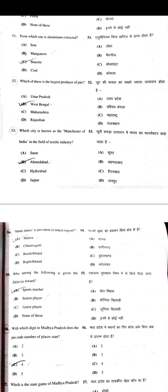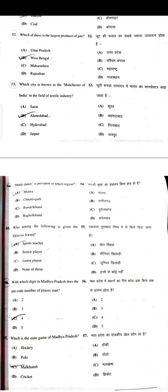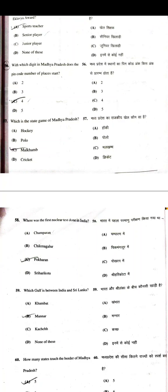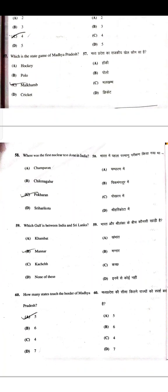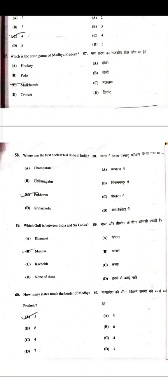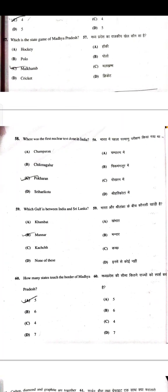From which ore is aluminium extracted — Bauxite. Which is the largest producer of jute — West Bengal. Which city is known as the Manchester of India in the field of textile industry — Ahmedabad. Matki dance is prevalent in which region — Malwa. Who is given the Eklavya award — Sports teacher. With which digit does the pin code of Madhya Pradesh start — 4. What is the state game of Madhya Pradesh — Malakhamba.